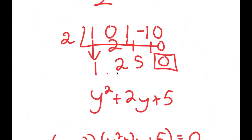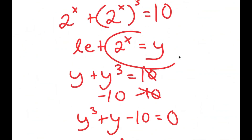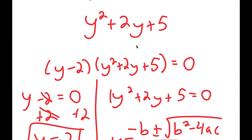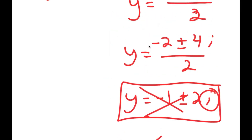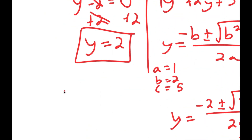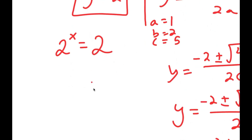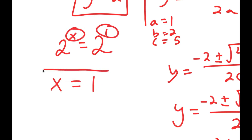I have three total solutions for y, but we're not done yet. Remember, we let 2 to the power of x equal y. So how can 2 to the power of x equal an imaginary number? It can't. Meaning the imaginary solutions are not valid. My only valid equation is 2 to the power of x equals 2. I can rewrite 2 as 2 to the power of 1, and since these two exponents must be equal, x is equal to 1. So x equals 1 is my solution for this problem.